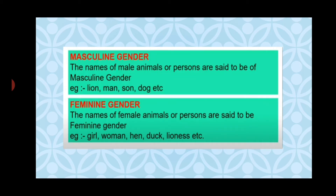Masculine gender: the names of male animals or persons are said to be of masculine gender. Examples are lion, man, son, dog, etc. Whereas feminine gender: the names of female animals or persons are said to be feminine gender. Examples are girl, woman, hen, duck, lioness, etc.